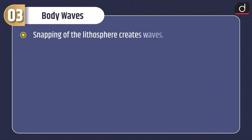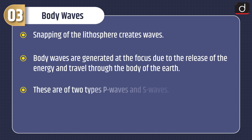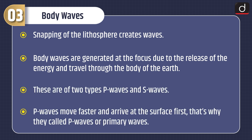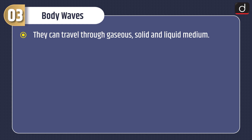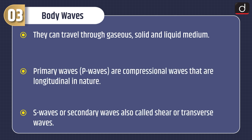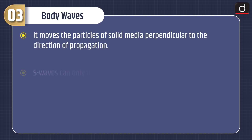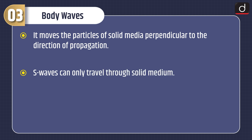Let's discuss about body waves. Snapping of the lithosphere creates waves. Body waves are generated at the focus due to the release of energy and travel through the body of the earth. These are of two types: P waves and S waves. P waves move faster and arrive at the surface first, which is why they are called primary waves. They can travel through gaseous, solid, and liquid medium and are compressional waves that are longitudinal in nature. S waves, or secondary waves, are also called shear or transverse waves. They move the particles of solid media perpendicular to the direction of propagation.